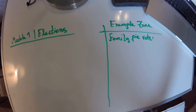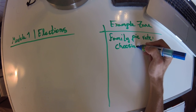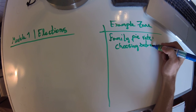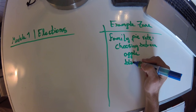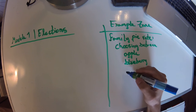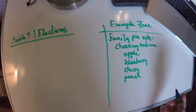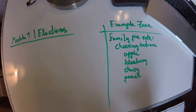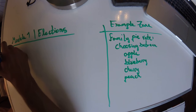So let's say that you're at this family reunion, and your family is totally bizarre, such that they need the entire family to vote on which pie they want for dessert before they decide which pie to make. Our choices — we're choosing between apple, blueberry, cherry, and peach pies. We need to choose one of these, and we're going to do this with some sort of election.